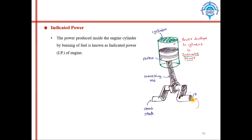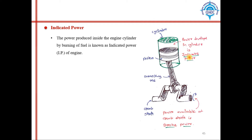The piston is connected to the crankshaft through linkages — crank and connecting rod — with pin joints between the bearings. The power generated inside the cylinder by burning or combustion of fuel is called indicated power. The power available at the crankshaft is called brake power, and the power produced inside the engine cylinder by burning of fuel is known as indicated power.